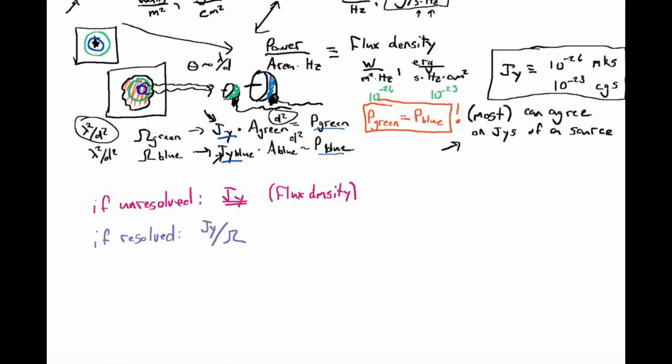But if we divide by the appropriate field of view — the angular area of that telescope — we'll have cancelled out the added collecting area, and we'll come back to a measure that everybody can agree on.